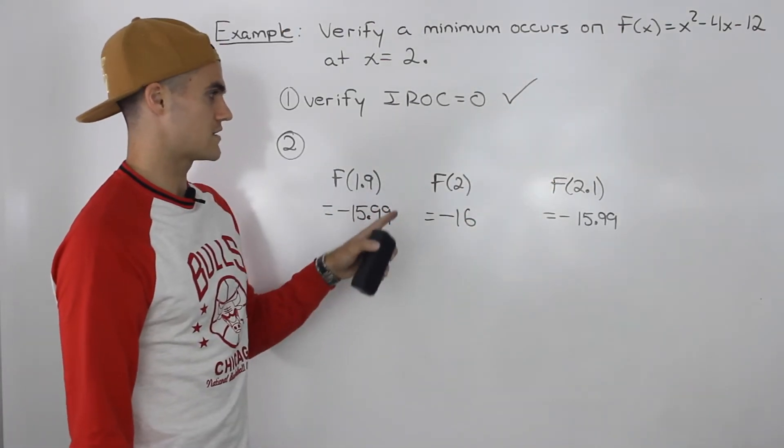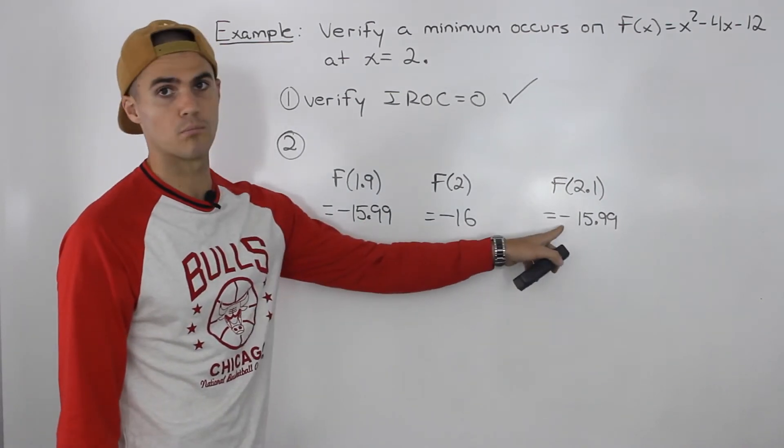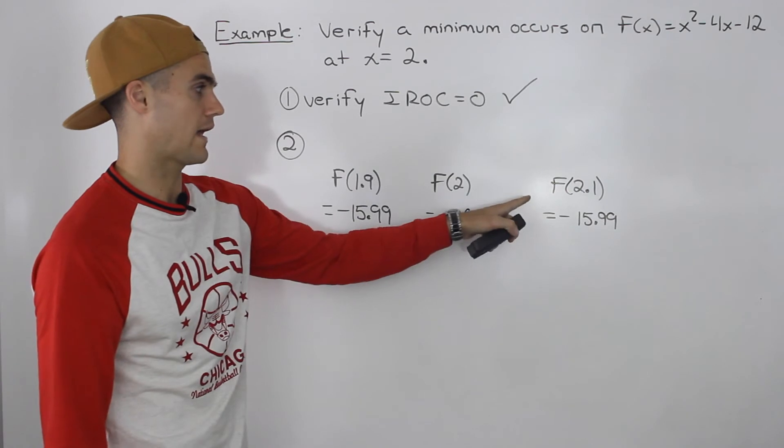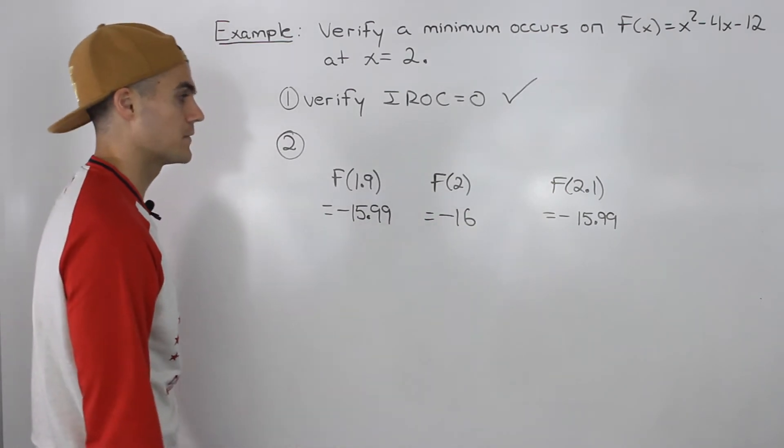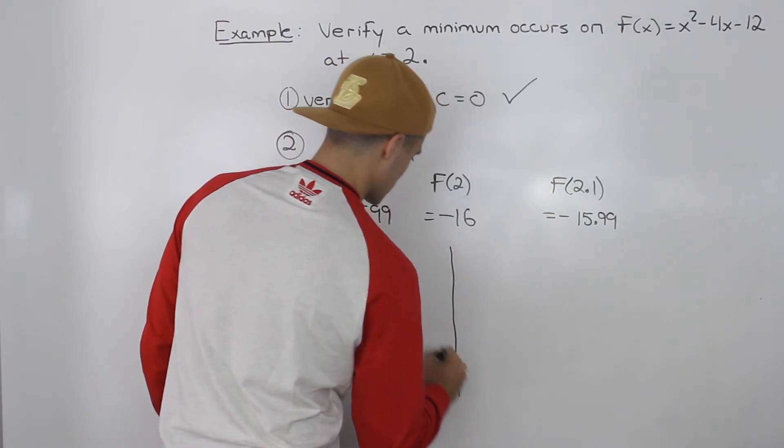When we plug those values in, we end up getting that y value of -15.99 for both 1.9 and an x value of 2.1. So let's graph these three points out and see what's going on visually.